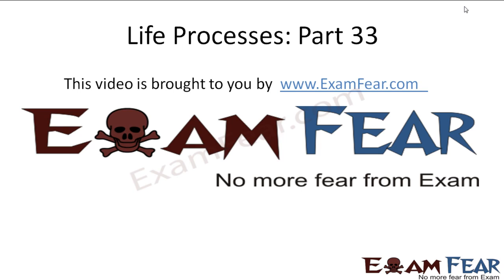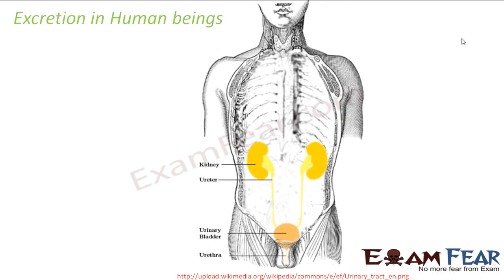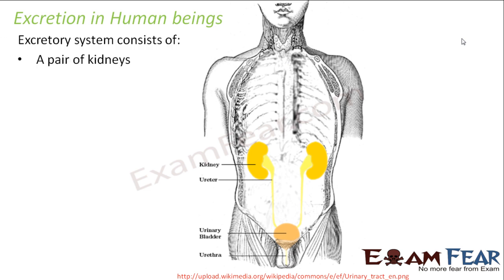This video on life processes part 33 is brought to you by examfear.com. In the case of human beings we have a very specific excretory system, the way we have a specific circulatory system, a respiratory system, and a digestive system. Similarly, we have a very specific, well-organized excretory system in human beings.